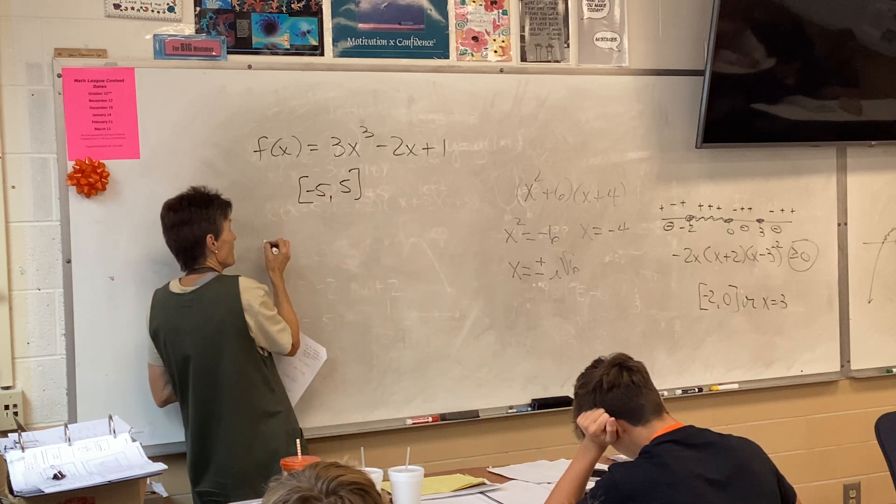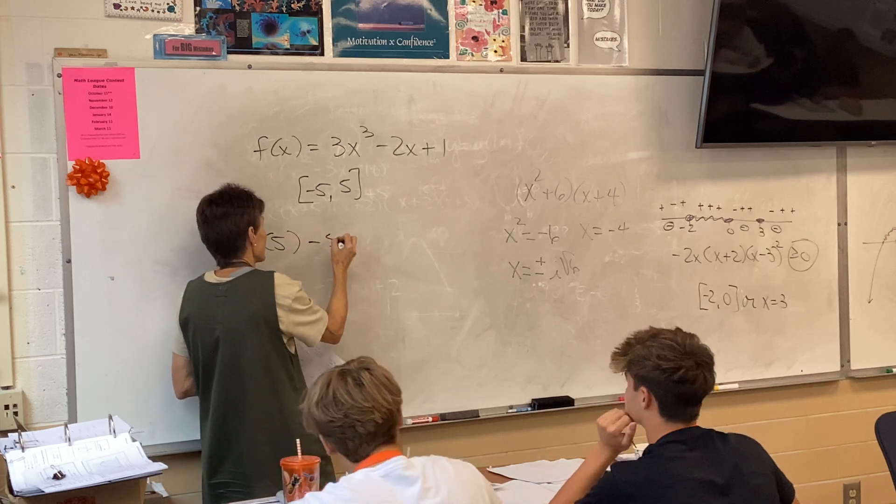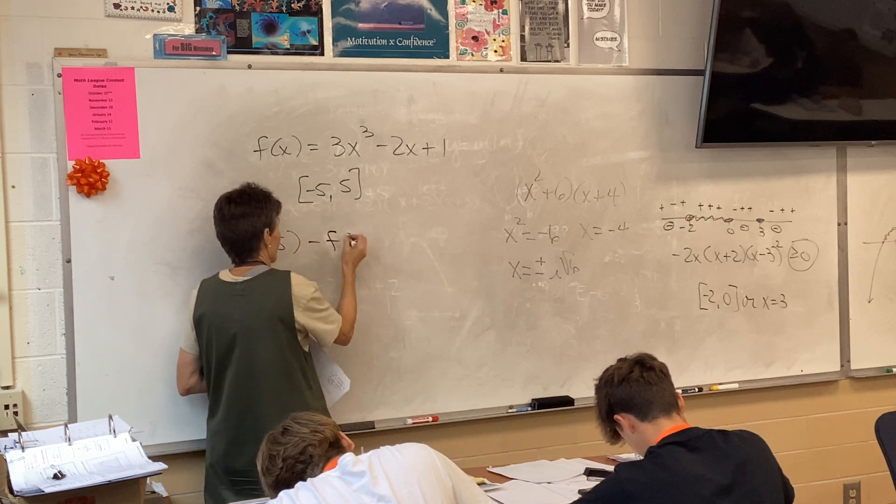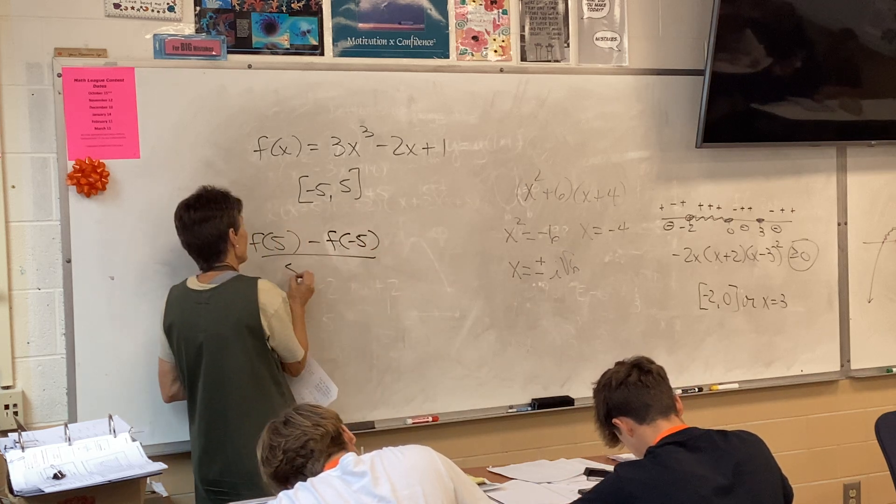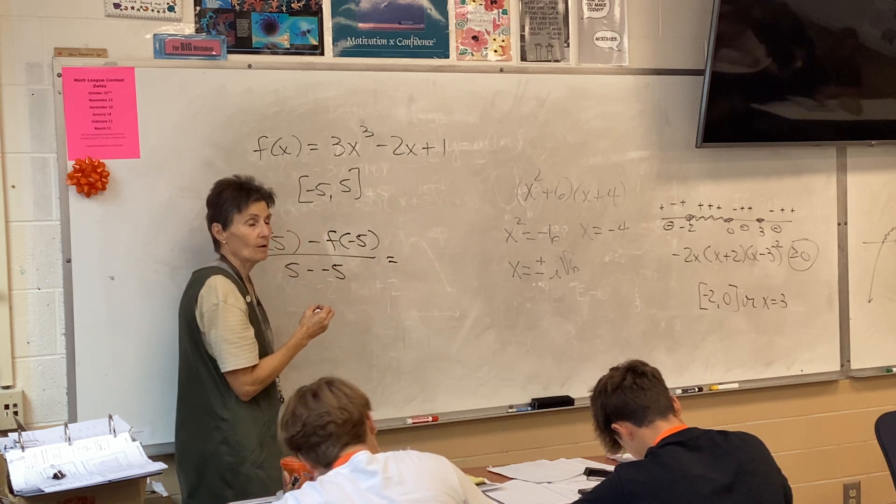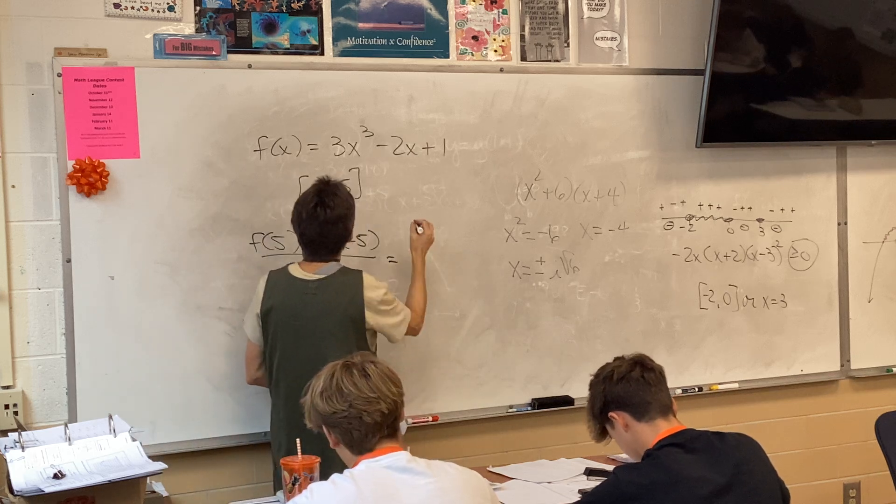So what are we going to write on our paper? So f of 5 minus f of negative 5, over 5 minus negative 5. Is that alright with everybody? Oh yeah. Alright, so here we go. Figure out what f of 5 is.